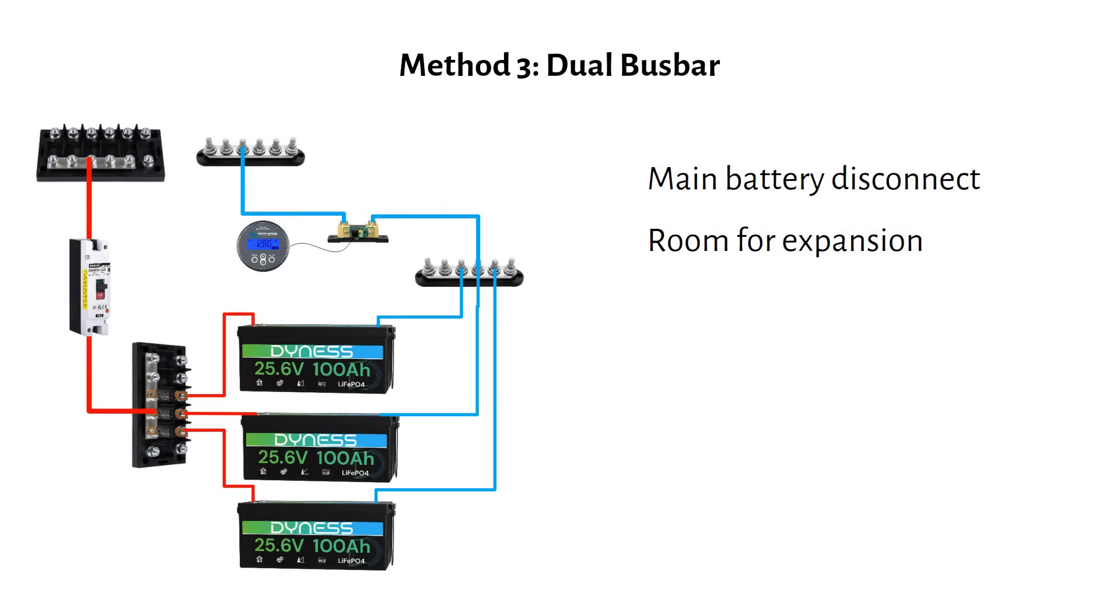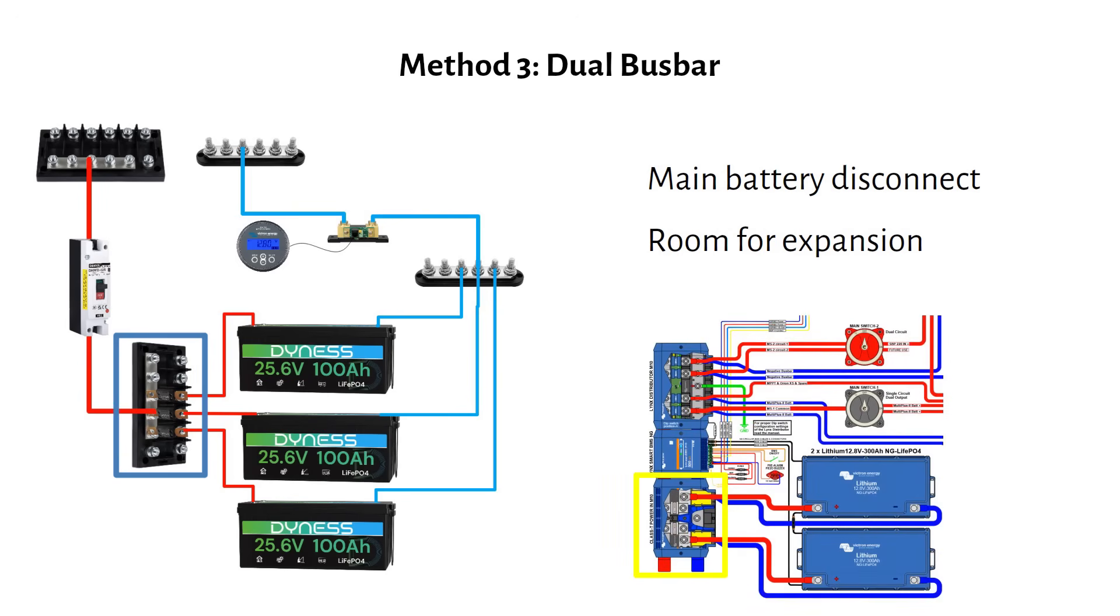This is basically the same concept as a Victron Lynx system. A Lynx power in, feeding a Lynx distributor. The difference is cost. Instead of spending $340 on these two Victron bus bars, you can build the same layout for $93 using two mega fuse bus bars plus two smaller standard bus bars.